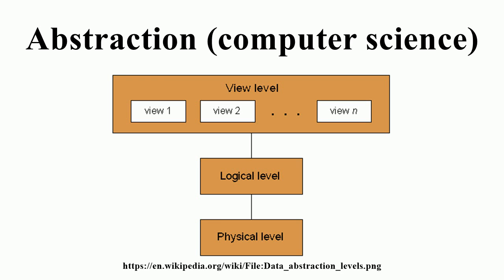When abstraction proceeds into the operations defined, enabling objects of different types to be substituted, it is called polymorphism. When it proceeds in the opposite direction, inside the types or classes, structuring them to simplify a complex set of relationships, it is called delegation or inheritance.